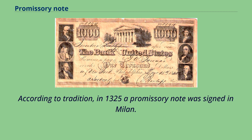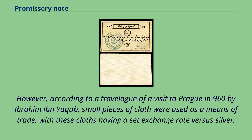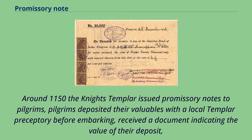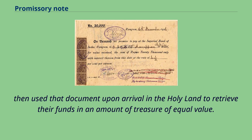According to tradition, in 1325 a promissory note was signed in Milan. However, according to a travelogue of a visit to Prague in 960 by Ibrahim ibn Jagub, small pieces of cloth were used as a means of trade, with these cloths having a set exchange rate versus silver. Around 1150, the Knights Templar issued promissory notes to pilgrims. Pilgrims deposited their valuables with a local Templar preceptory before embarking, received a document indicating the value of their deposit, then used that document upon arrival in the Holy Land to retrieve funds of equal value.